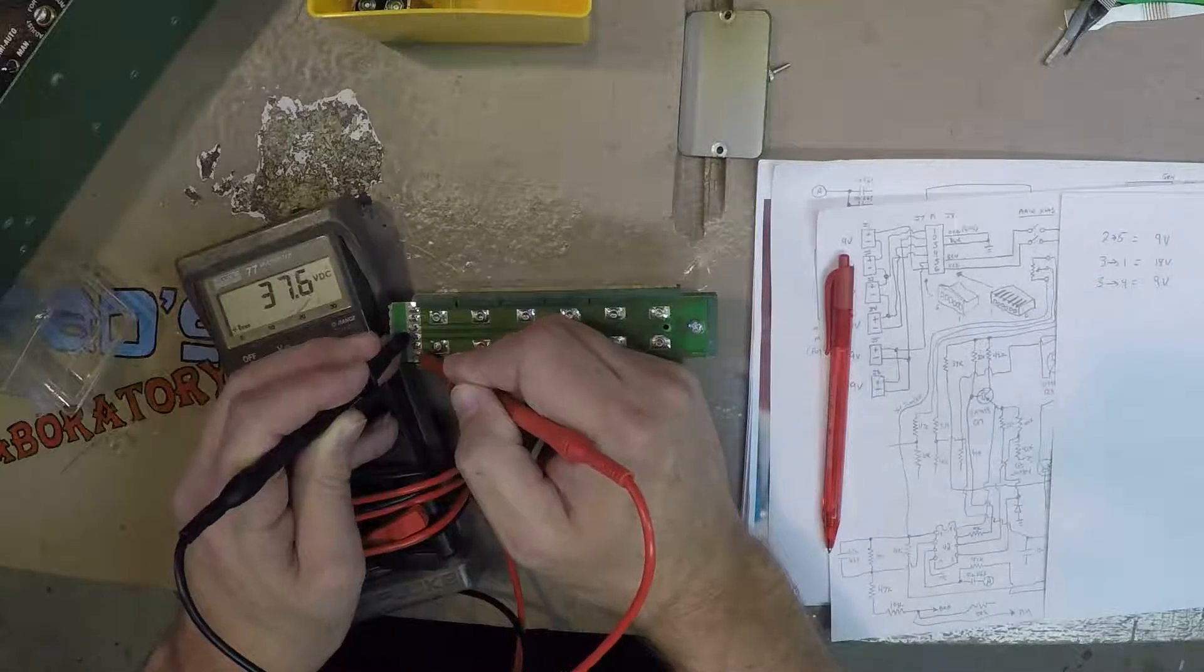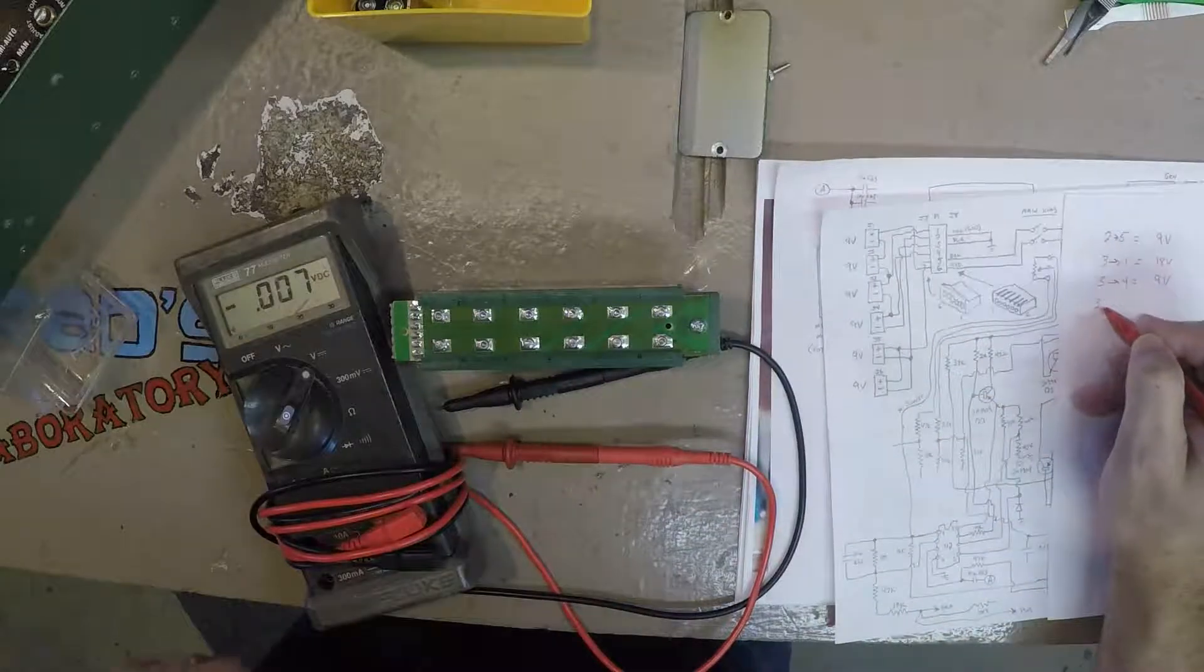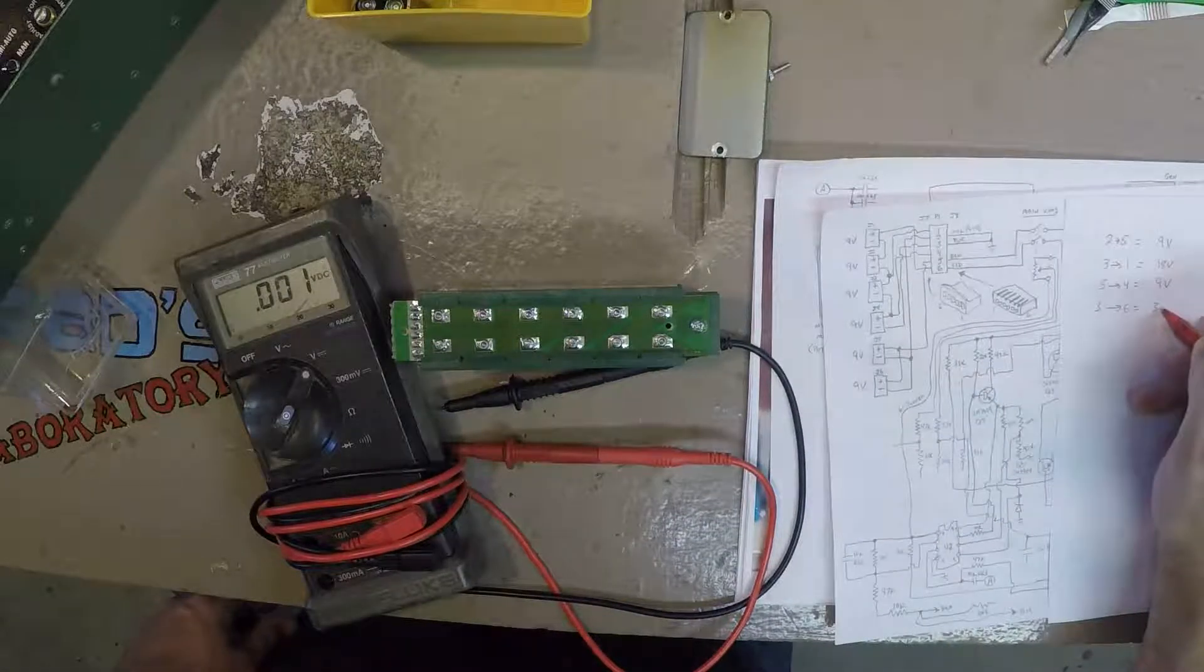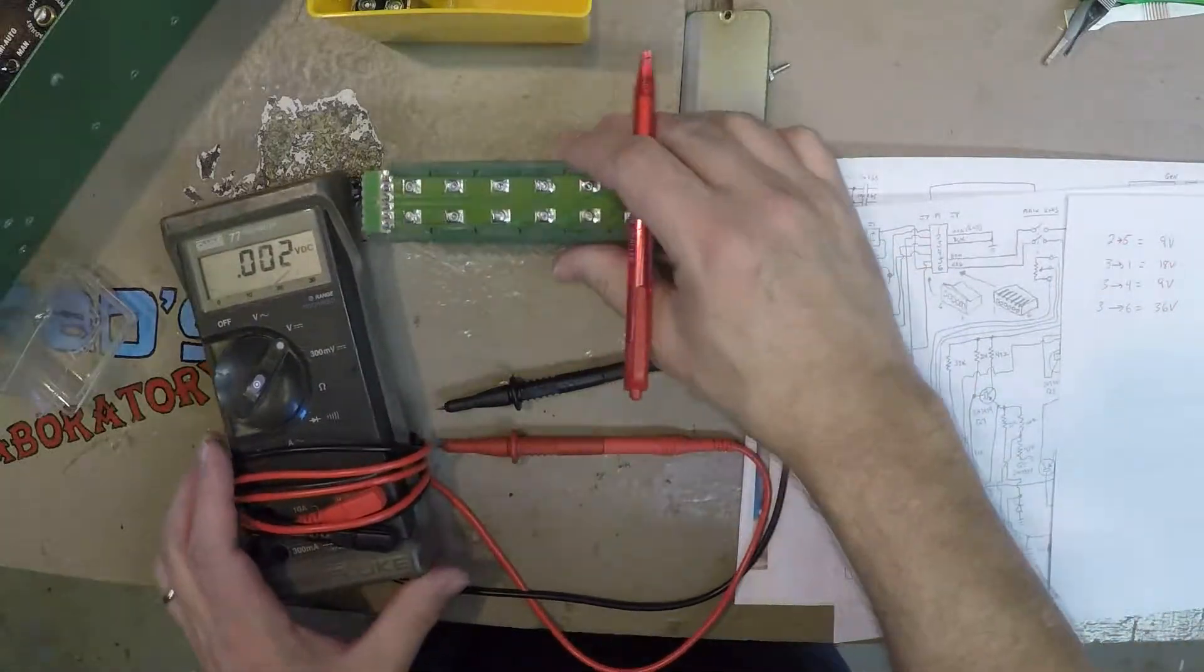4 equals 37 volts. I'll call it 36 volts because my batteries are all running a little hot.